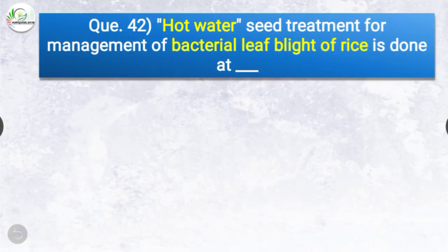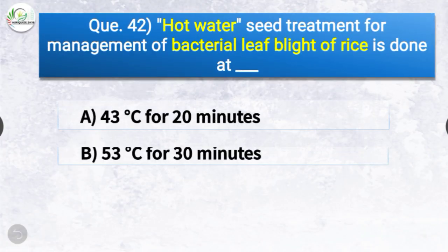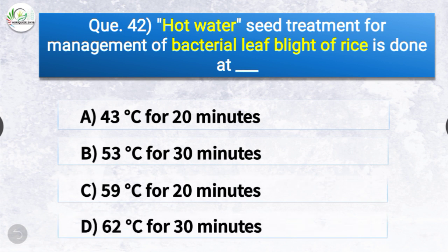Question number forty-two: Hot water seed treatment for management of bacterial leaf blight of rice is done at — the options are 43°C for 20 minutes, 53°C for 30 minutes, 59°C for 20 minutes, or 62°C for 30 minutes. The correct answer is option B — 53°C for 30 minutes.